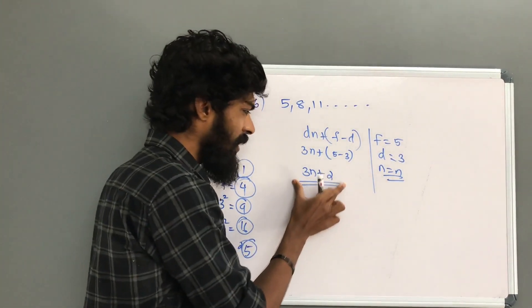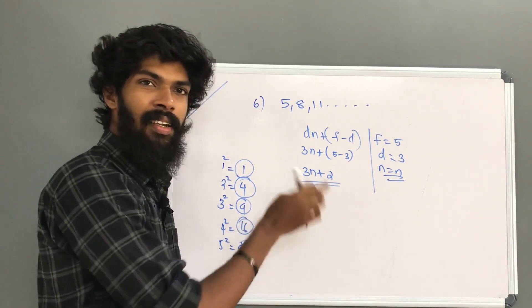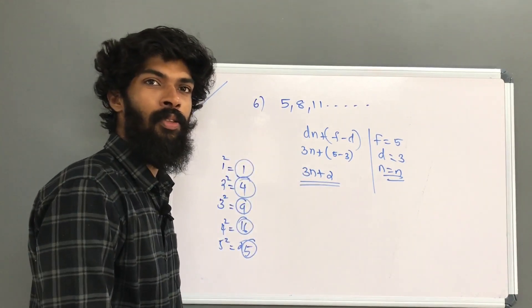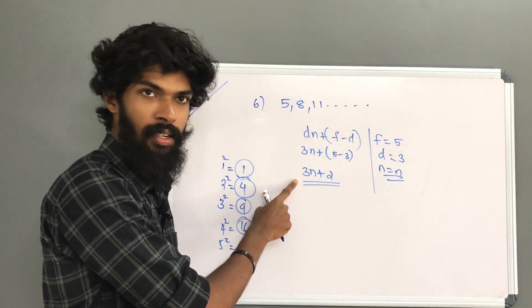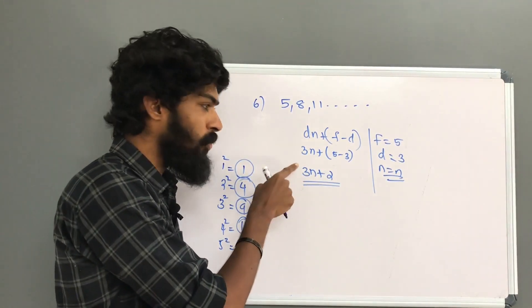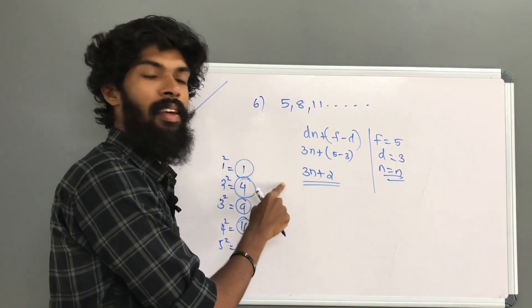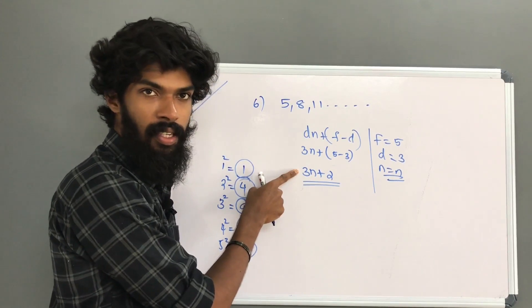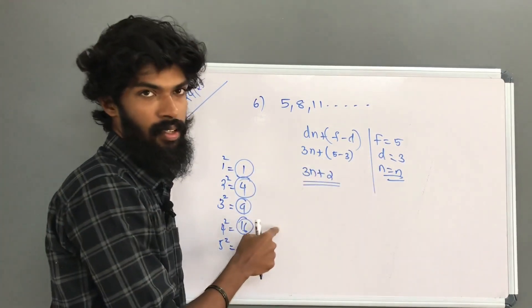We see the meaning here. So we see how 3n plus 2 gives us the meaning. We see how we get the 3. It is the common difference.